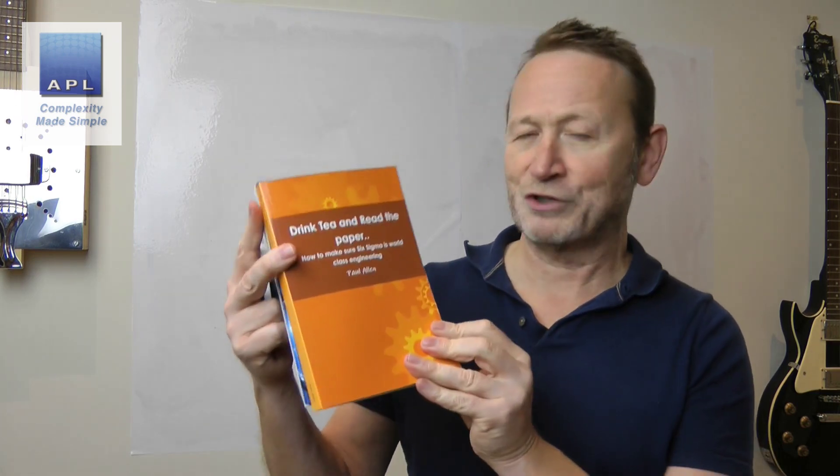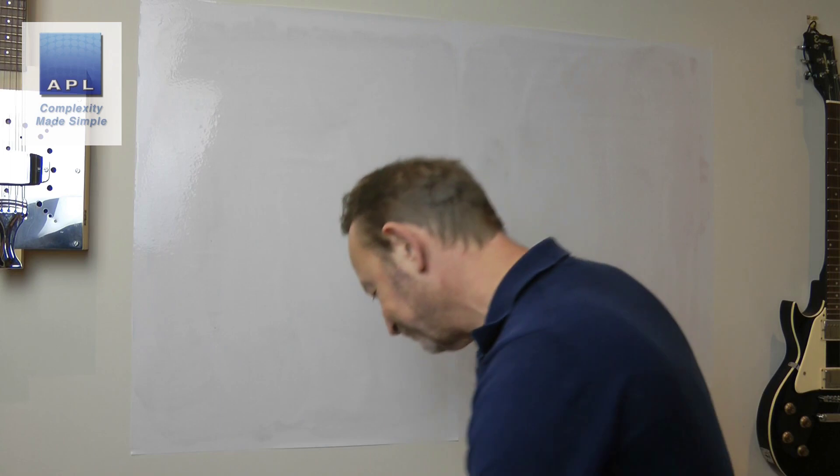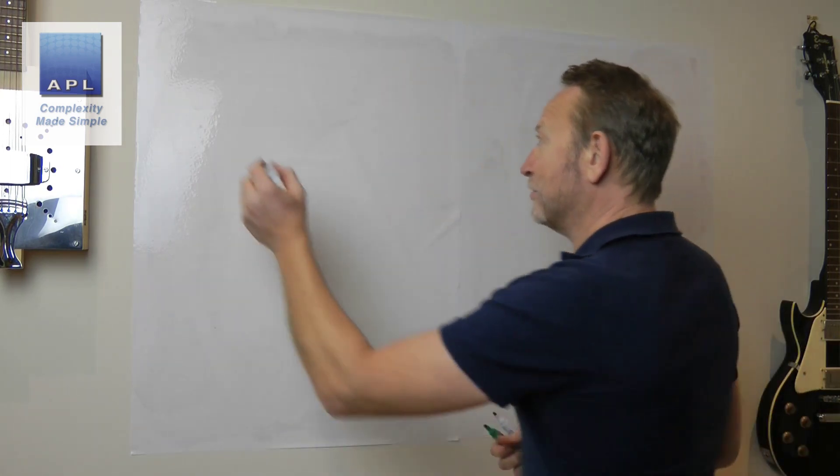And finally, if you are a Six Sigma black belt or green belt and you really want some advice on how to use what you've learned and save your organization pots and pots of cash, Drink Tea and Read the Paper is the book that you need. Also available from lulu.com.